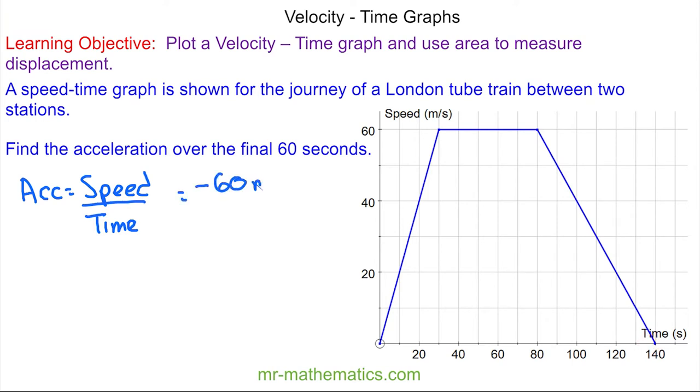This is in meters per second. The time is from 80 to 140, which is 60 seconds. So negative 60 divided by 60 is negative 1. Meters per second divided by seconds is meters per second squared. You can see our acceleration is a negative, which means it is slowing down.